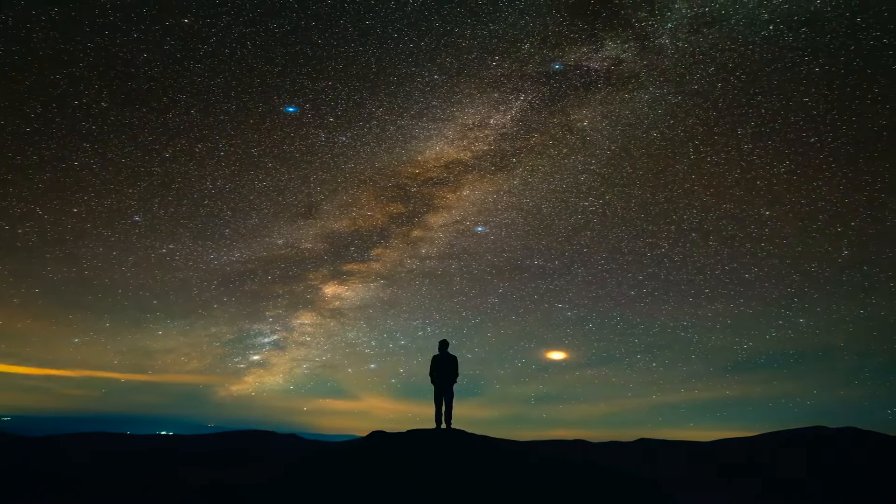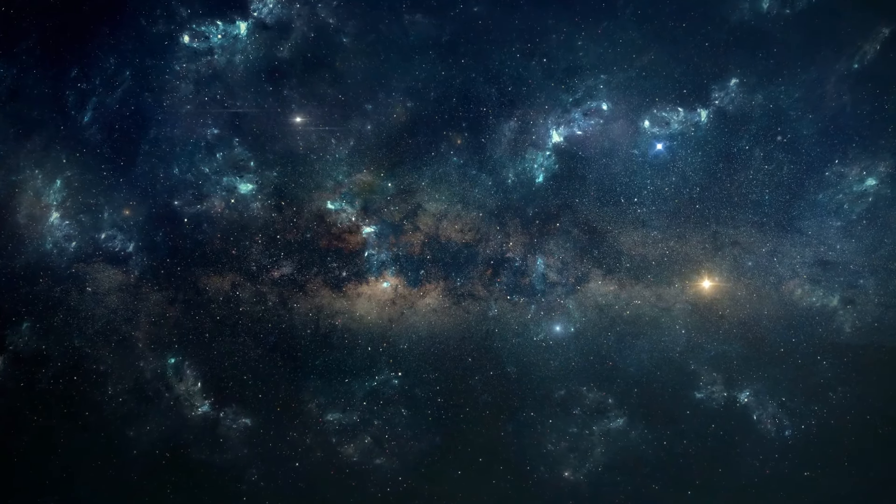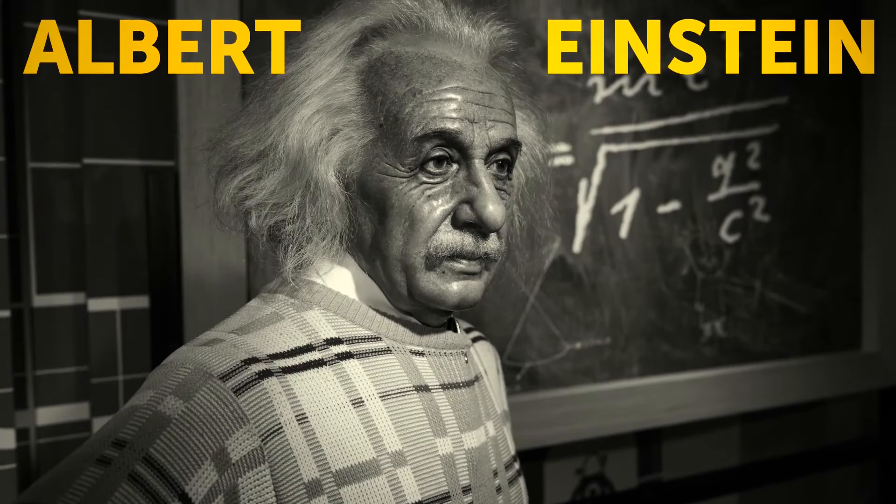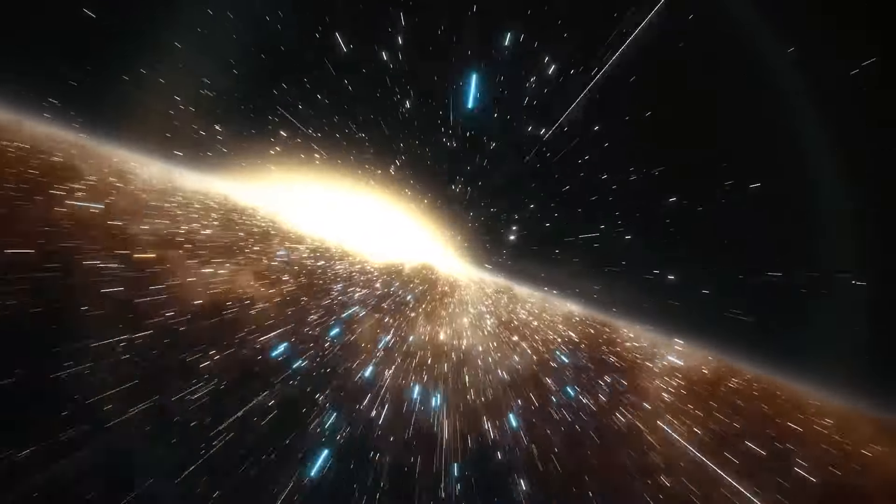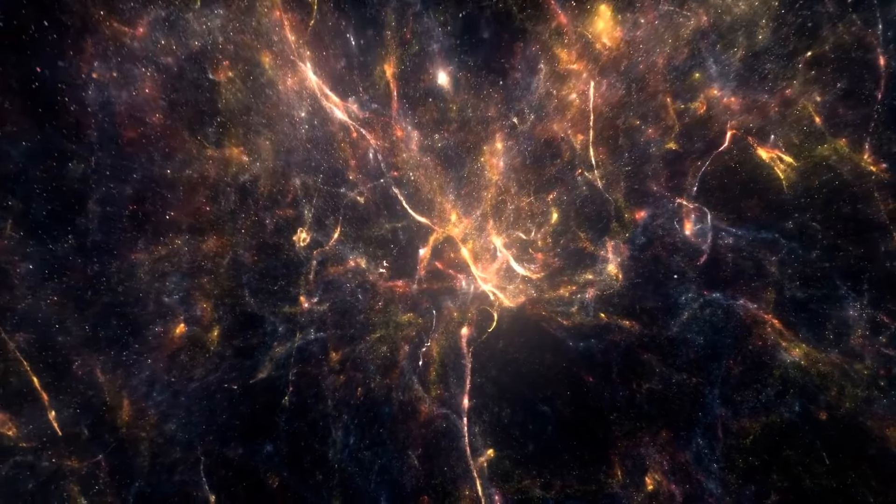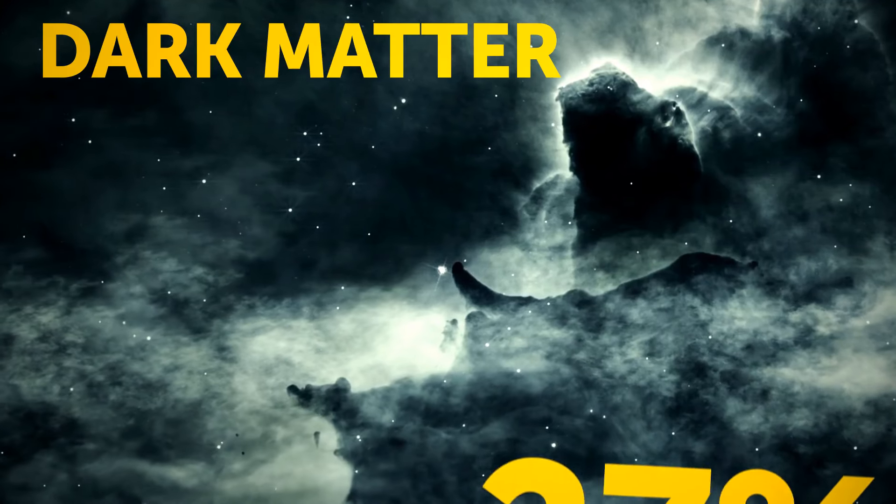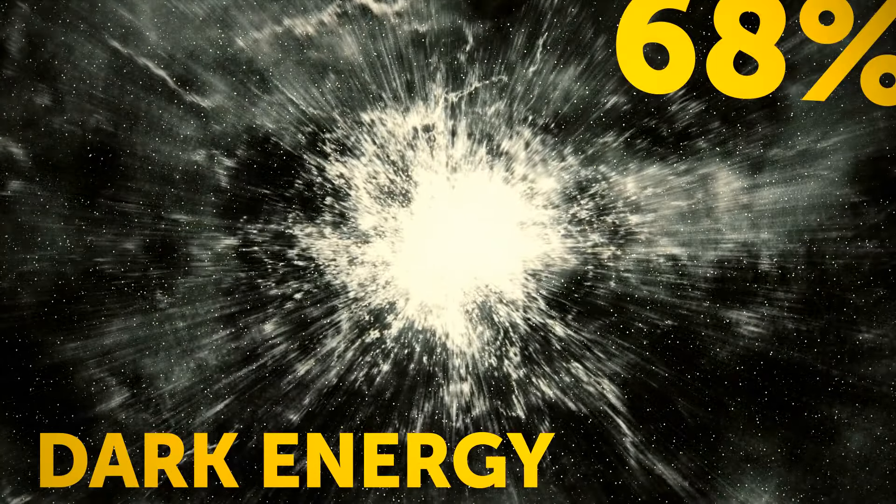Humans explore the universe all the time, but we can only see around 5% of the matter up there. And Albert Einstein was the first one that realized the empty space is not really nothing. The rest we can't see is actually made up of invisible matter, also known as dark matter. It's about 27%. Combined with something called dark energy, which is 68%.